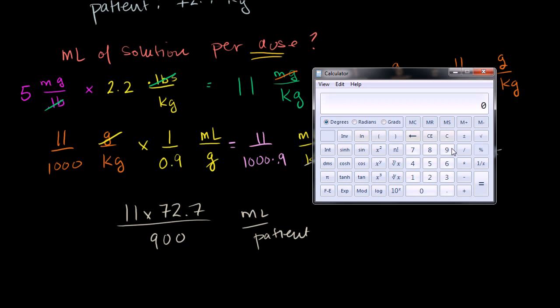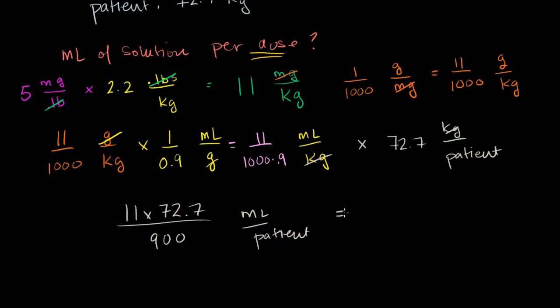However you want to say it. Per dose per patient. So let's get our calculator out and do this. So we have 11 times 72.7 is equal to 799 divided by 900 is equal to 0.88, or we could round up 0.889. Hopefully the doctor won't mind. So that is equal to, this is equal to, I'll write in a nice vibrant color, 0.889 milliliters of solution per dose.